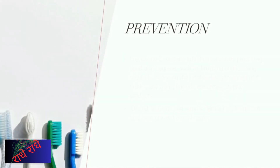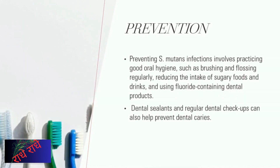Regular dental checkups and good oral hygiene are essential for preventing S. mutans infections. Brushing and flossing on a regular basis, cutting down on sugary food and drinks, and using fluoride-containing dental products can help maintain the health of your teeth and mouth. Additionally, dental sealants can be a great safeguard against dental caries. These simple measures can help keep your teeth free from infection and cavities.